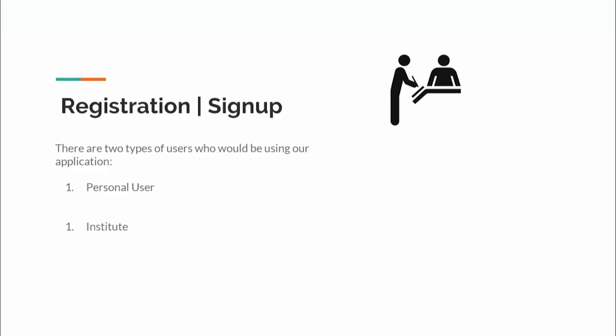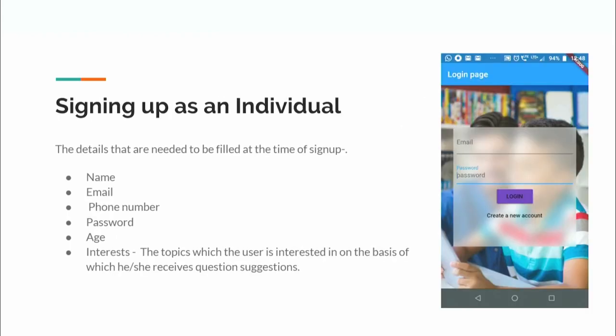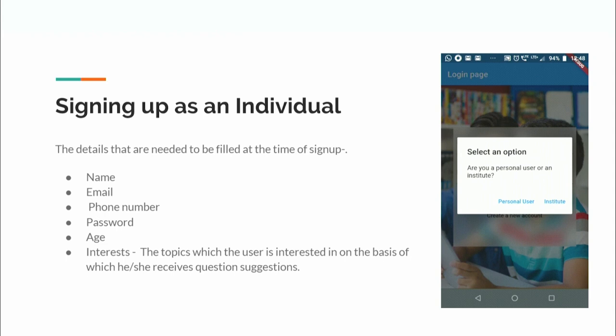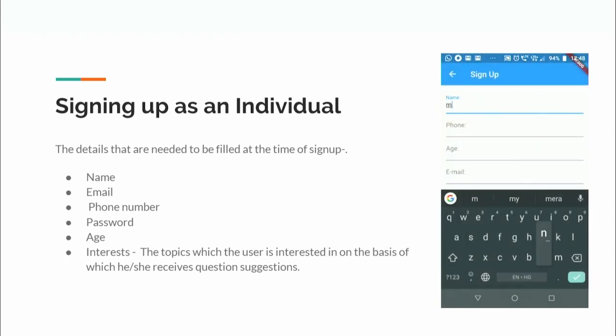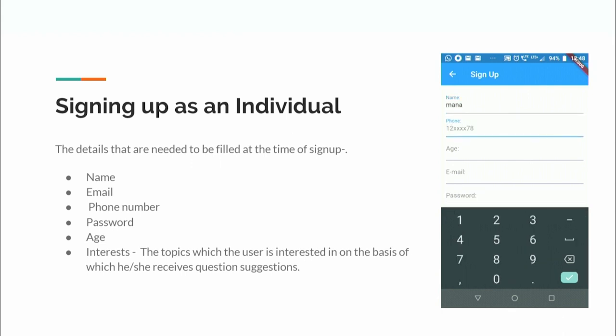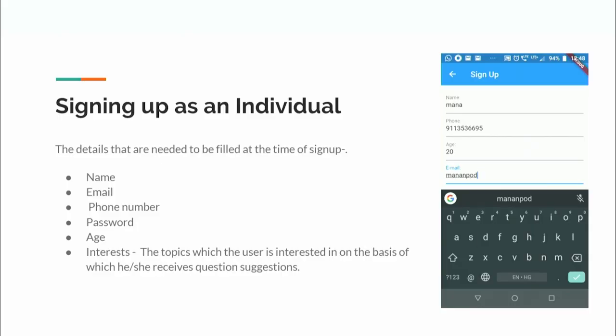The application can be used by two kinds of users: an individual and an institute. If the user signs up as an individual, the details taken are name, email, phone number, password, age, and interest. The email is used to uniquely identify the user. The interest field allows the app to match the user with questions they are likely to answer, based on topic matching.